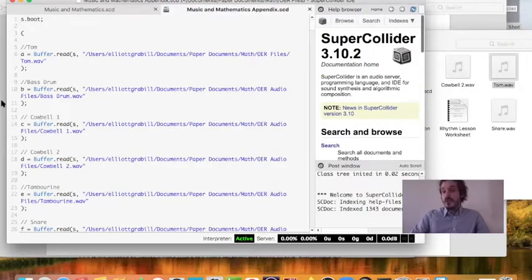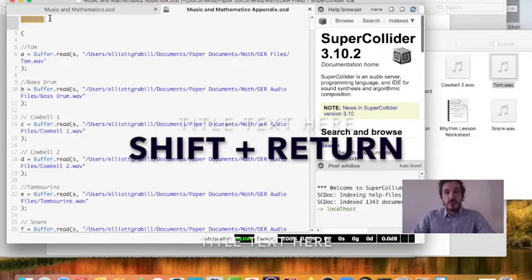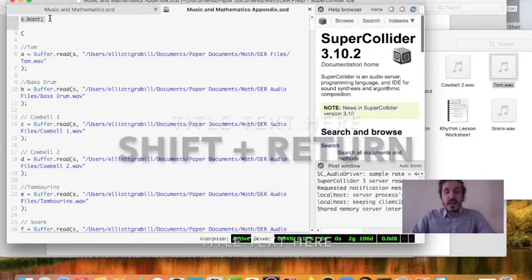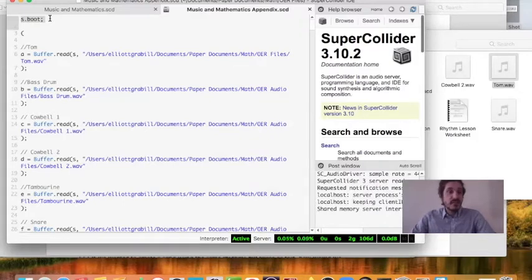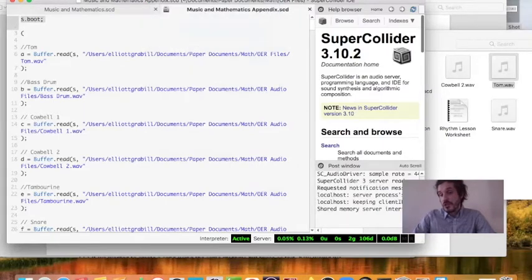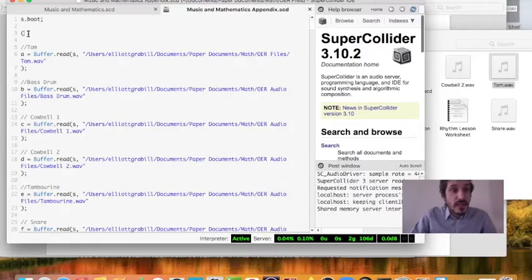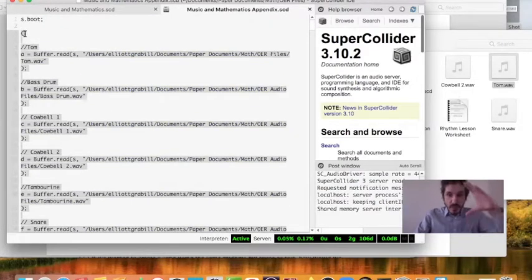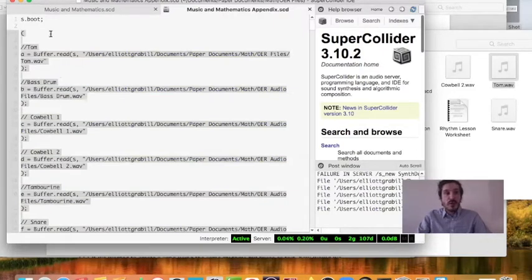One last thing before we start to have fun with SuperCollider. We need to boot the server. What we're going to do is we're going to highlight that and we just press shift return. And a lot of times when we have errors, sometimes the best thing to do is just reboot the server. I can go to language and I can do quit interpreter, reboot the interpreter, and then I can also reboot the server. Now we have to tell the computer what audio files to look for. So I'm going to double click right next to this parentheses mark. And you can see everything has been highlighted between this outside parentheses and this parentheses. And I'm just going to press shift return. Again, very similar to what I did with s.boot.